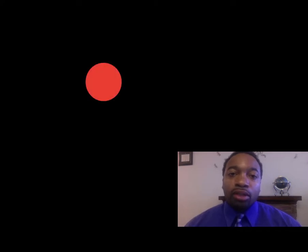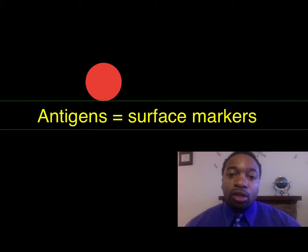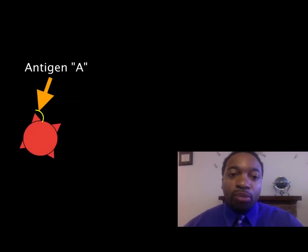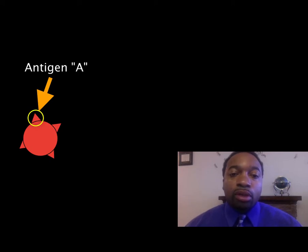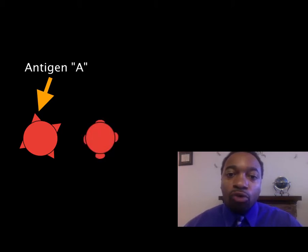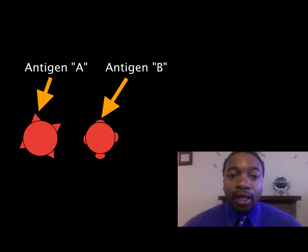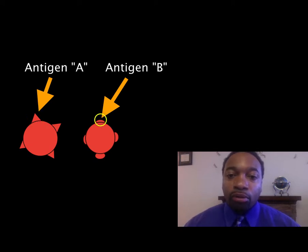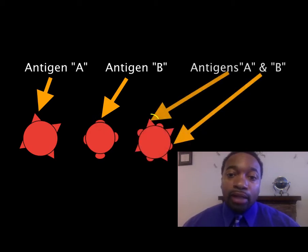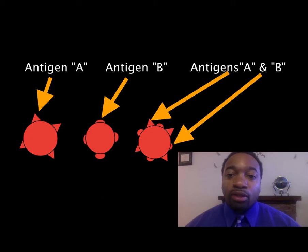On red blood cells, there are basically two different types of antigens — those are the surface markers. There is an antigen called A, which is triangle-shaped in this schematic — not the real shape, just giving you an idea. So the triangle-shaped structure is the A antigen. And then this sort of half oval-shaped structure is the B antigen. Red blood cells can have either an A antigen, a B antigen, both A and B antigens simultaneously, or neither A nor B.